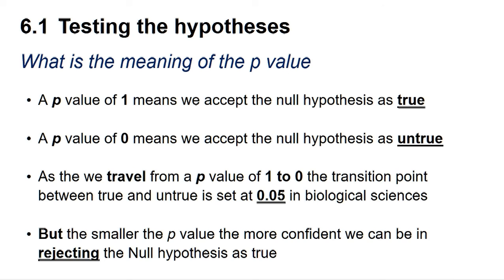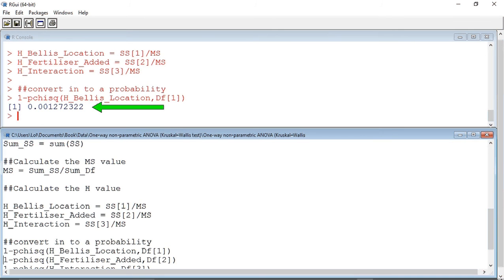As we travel from a p-value of 1 to 0, the transition point between true and untrue is set at 0.05 in the biological sciences. The smaller the p-value below 0.05, the more confident we can be in rejecting the null hypothesis.